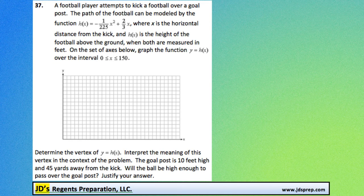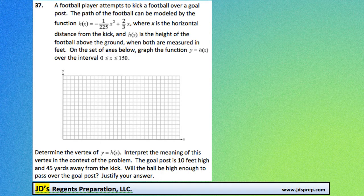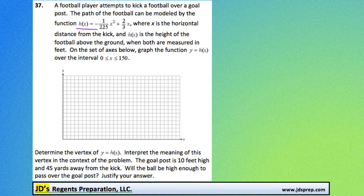Welcome to the final problem, question number 37 from the June 2015 Algebra Regents exam. In this problem, we have a football player that's kicking a football over a goal post, or at least attempting to, and we've got the path of the football modeled by this function here.